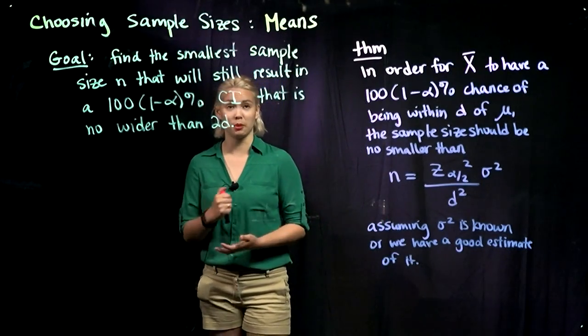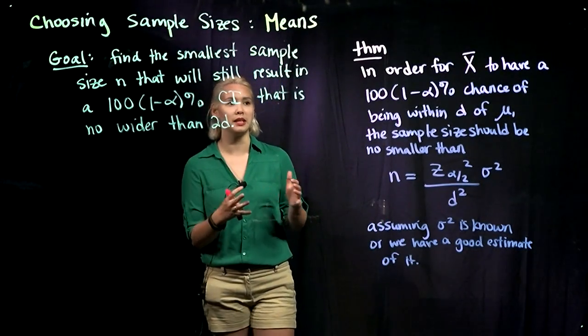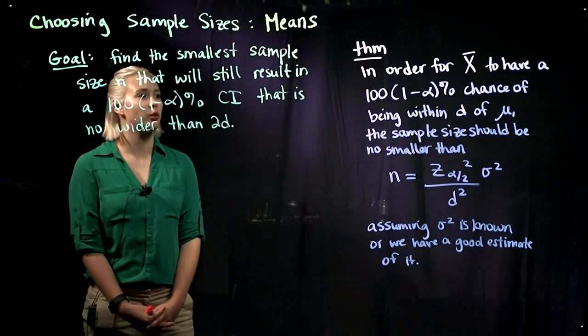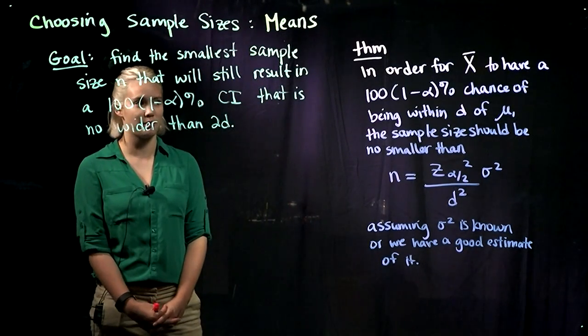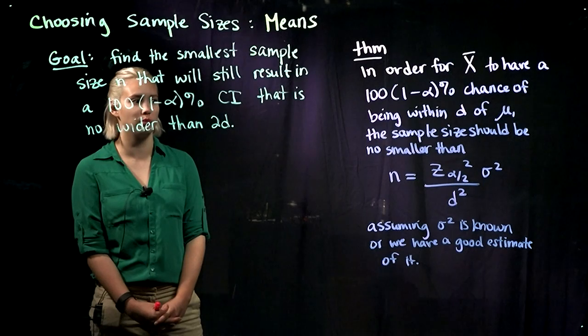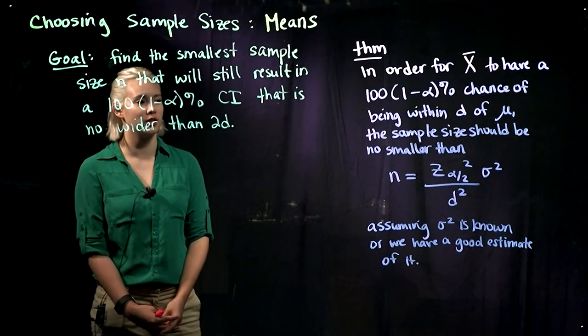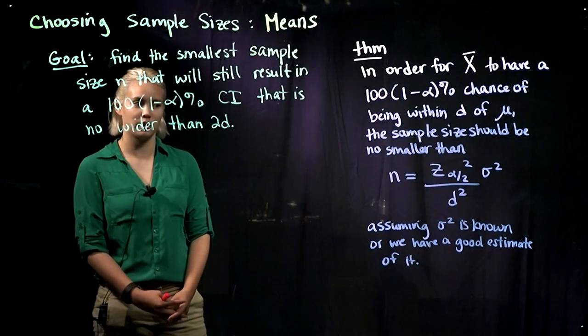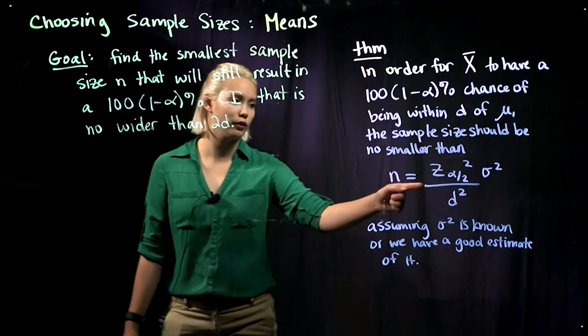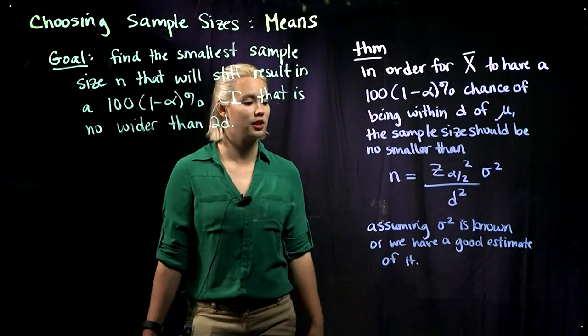Similar to the proportion setting, we have a theorem for the means. In order for our sample mean x-bar to have a 100 times 1 minus alpha percent chance of being within d of mu, the sample size should be no smaller than n equals z alpha over 2 squared times sigma squared divided by d squared. And z alpha over 2 is defined just as it was in the previous video.